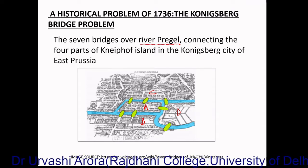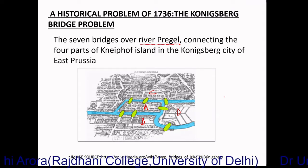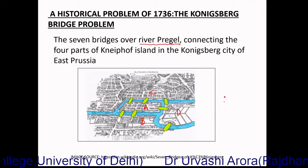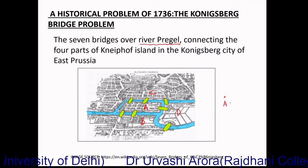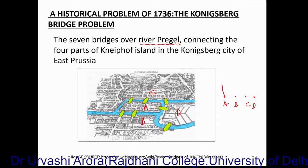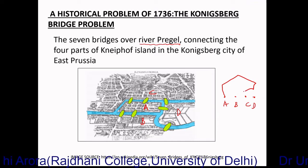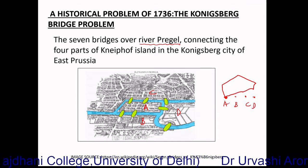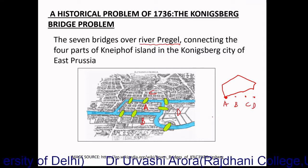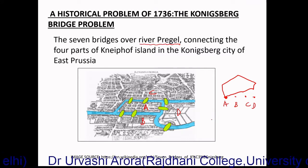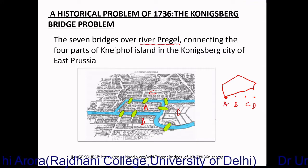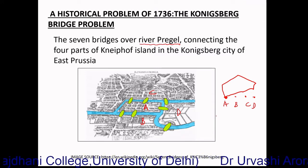At that time, a question came in people's minds: is it possible to start from any of the four land masses A, B, C, D, move along all seven bridges exactly once, and come back to the same land mass you started with?